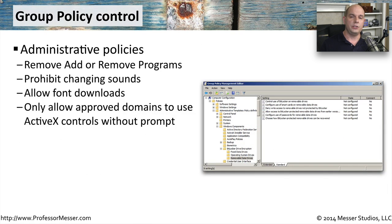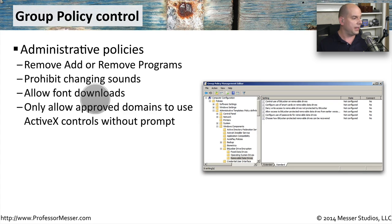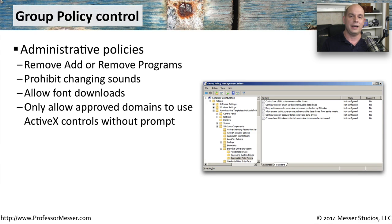There are generally two different areas in group policy to look at. One is the administrative policies, and the other is the security policies. In the administrative policies, we would do things like add or remove programs, allow people to change sounds or prohibit them from changing sounds, or allow or disallow font downloads. These are settings you can tweak and modify to get exactly the user experience you'd like and ensure the desktop environments work without any problems.